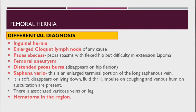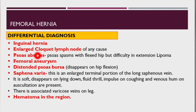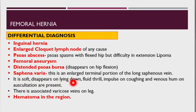In differential diagnosis, you need to think of the following: inguinal hernia; enlarged Cloquet's lymph node; psoas abscess; femoral aneurysm; distended psoas bursa — this one disappears on hip flexion; saphena varix — an enlarged terminal portion of the long saphenous vein, which is soft, disappears on lying down, has fluid thrill and impulse on coughing, venous hum on auscultation, and is associated with varicose veins on the legs; and hematoma in the groin.